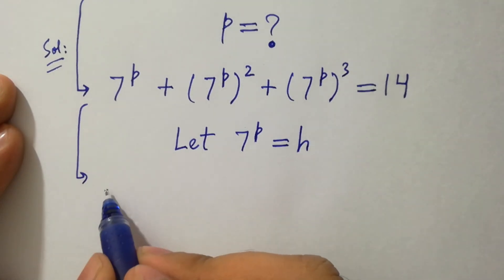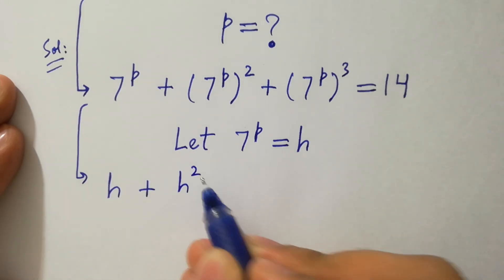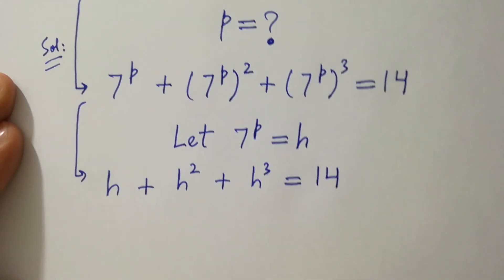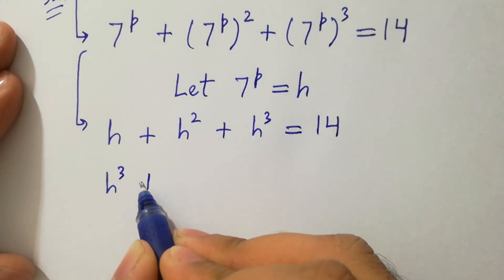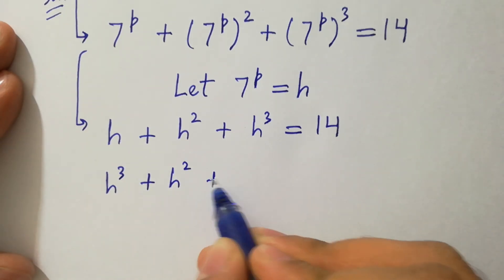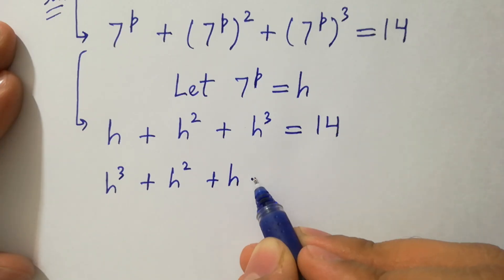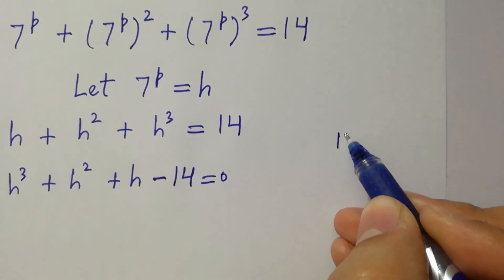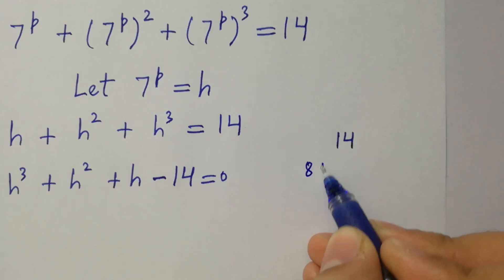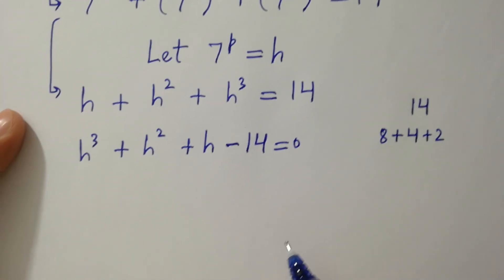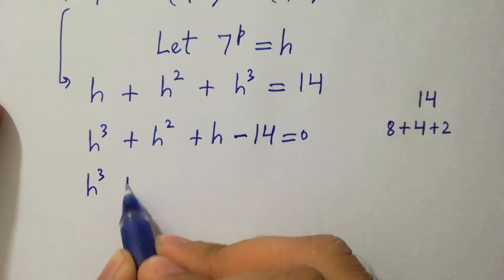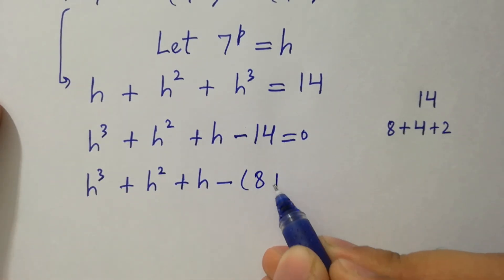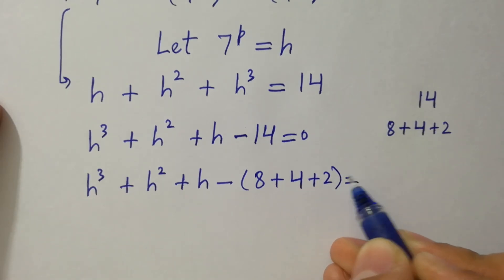We have h plus h squared plus h cubed equal to 14. So h cubed plus h squared plus h minus 14 equal to 0. Here 14 is same as 8 plus 4 plus 2.